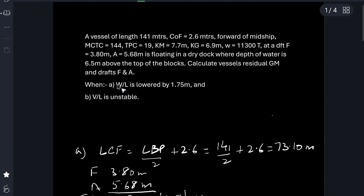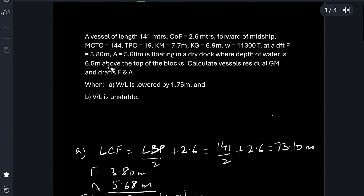They are asking us the drafts forward and aft and residual GM on two occasions: one when water level is lowered by 1.75 meters, and second when vessel is unstable. The current depth of water above the blocks is given as 6.5 meters and water level is lowered by 1.75 meters.